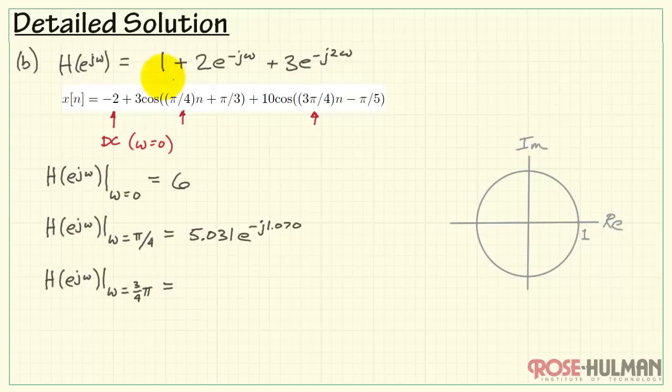We need to find the frequency response at omega equals 3 quarters pi. So, as before, we drop in that specific frequency into our generic expression. Again, I think it's helpful to visualize these complex values. e to the minus j 3 quarters pi looks like a vector at this angle. We see that its real projection is negative, as is the imaginary projection.